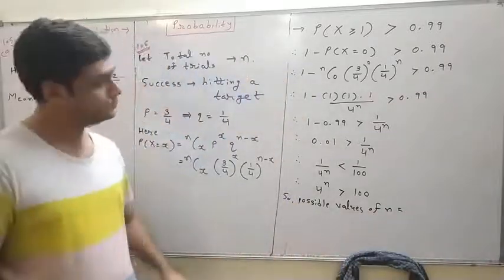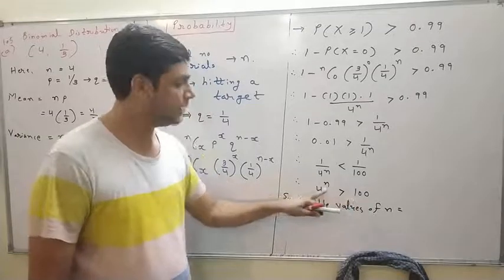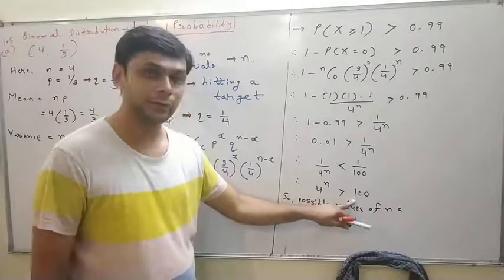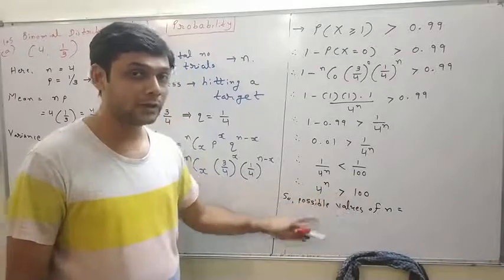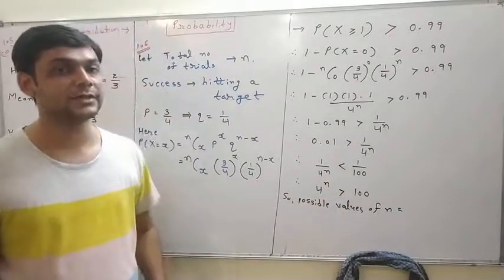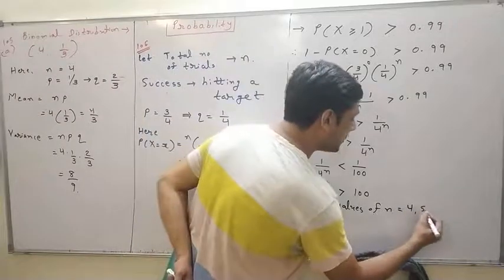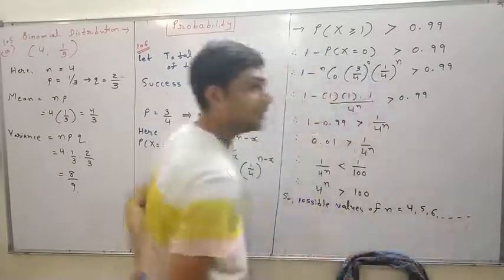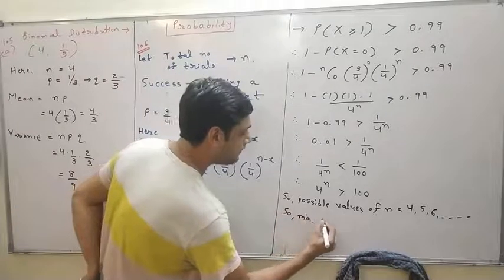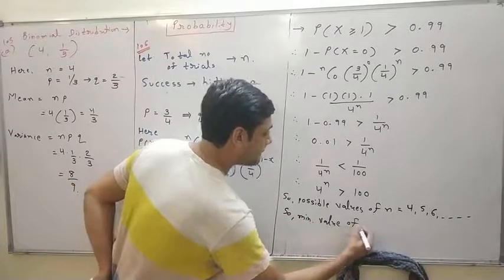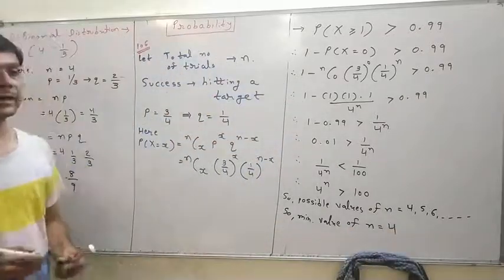Checking values: n equals 1 gives 4, not greater than 100. n equals 2 gives 16, not greater than 100. n equals 3 gives 64, not greater than 100. n equals 4 gives 4 raised to 4 equals 256, which is greater than 100. So possible values of n are 4, 5, 6 and so on. The minimum value of n is 4.